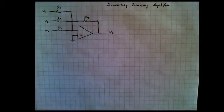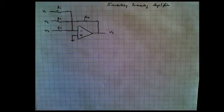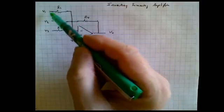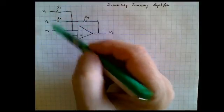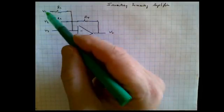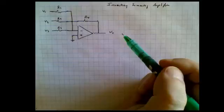This is the inverting-summing amplifier. It's a very interesting circuit. And we're just illustrating it here with three inputs, although we could have as many inputs as we like. And we're going to try and figure out what the relationship is between the inputs and the outputs.